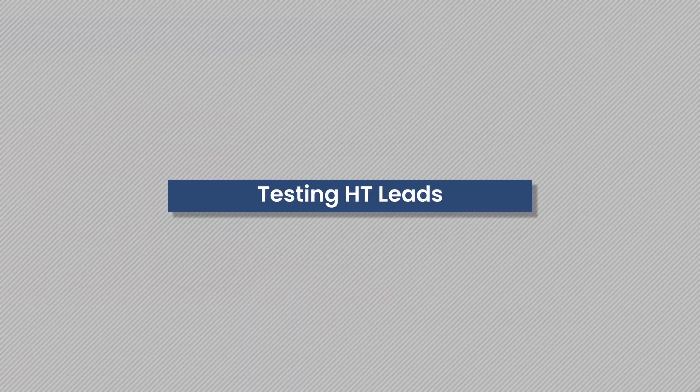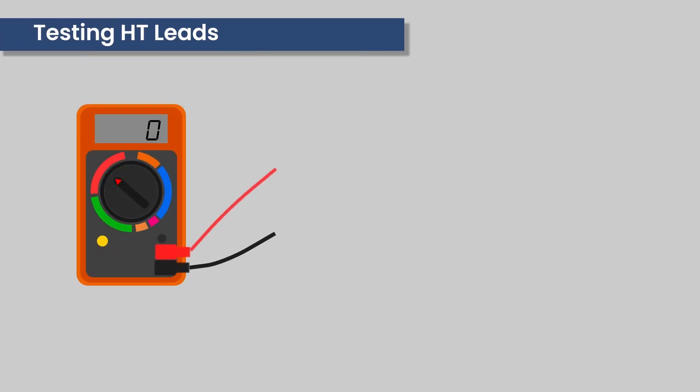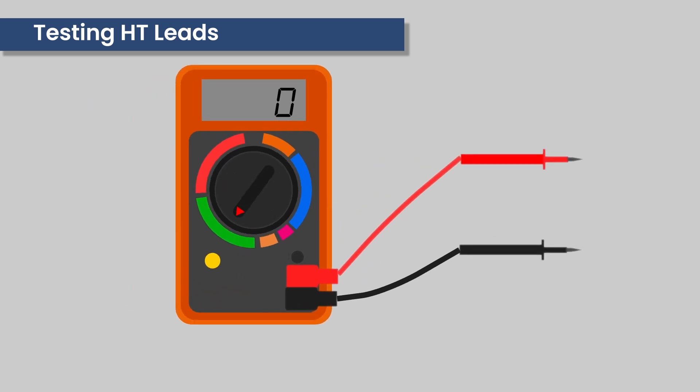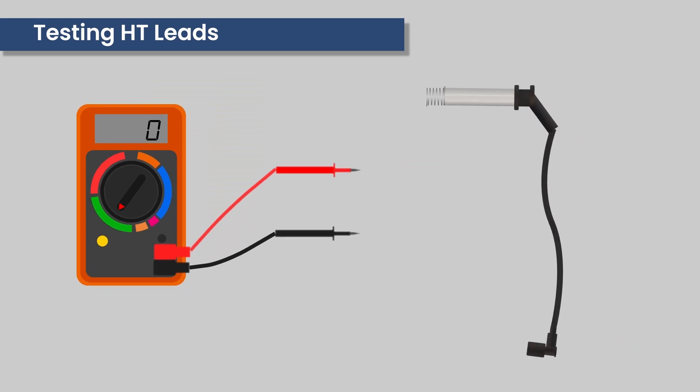Testing spark plug high tension leads: when testing HT leads, set your multimeter to k ohms. In our example here, our example will be set to 2000 in the green section. Resistance is normally about 16 kilo ohms per meter and normally a short HT lead can measure between 6 and 8 kilo ohms.